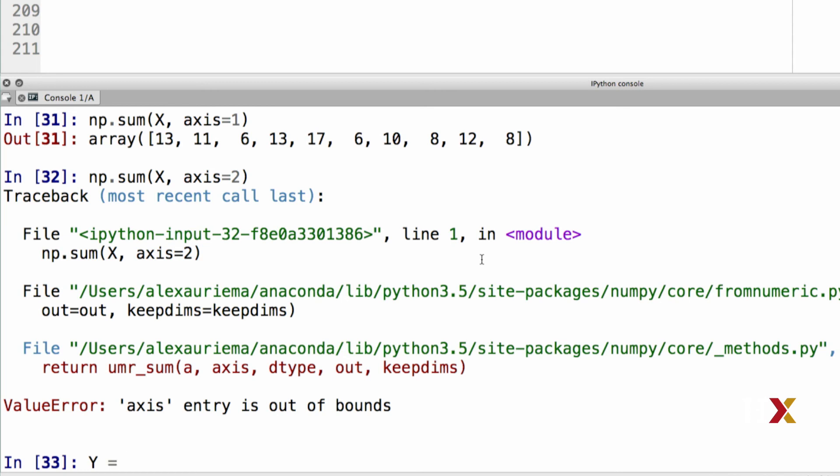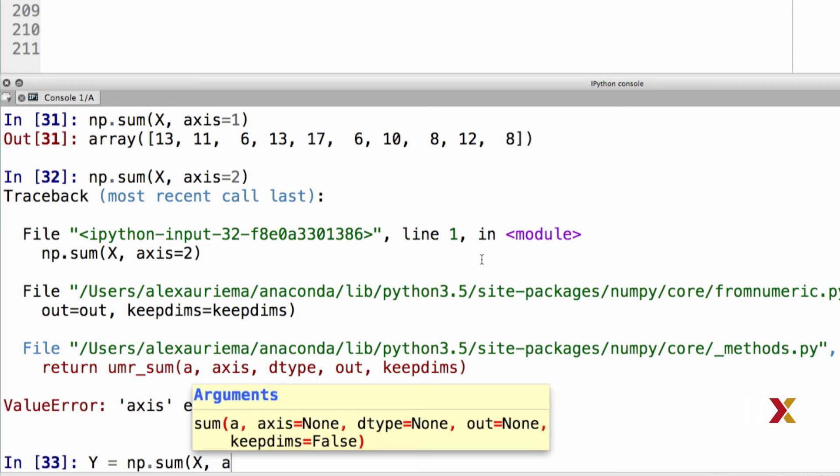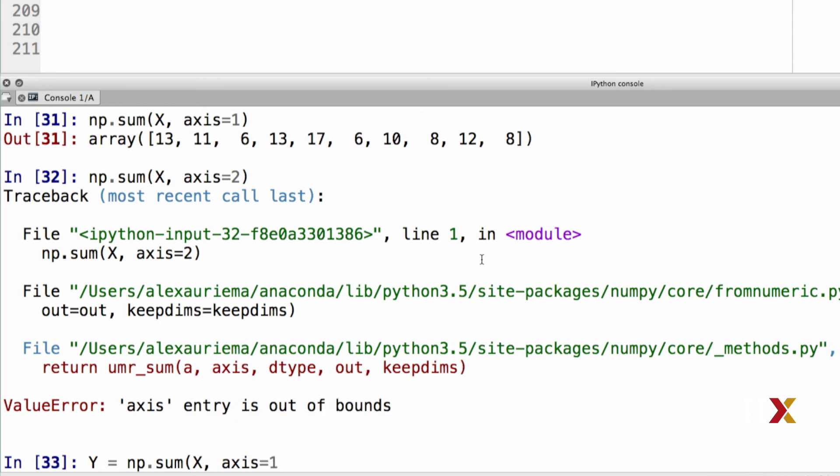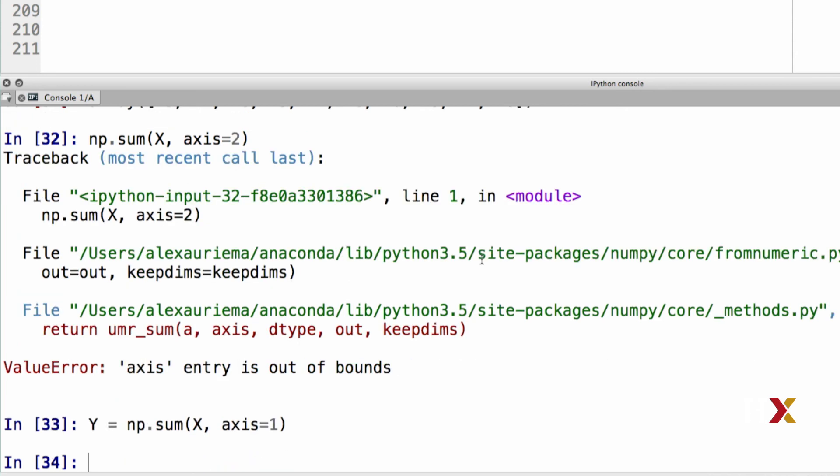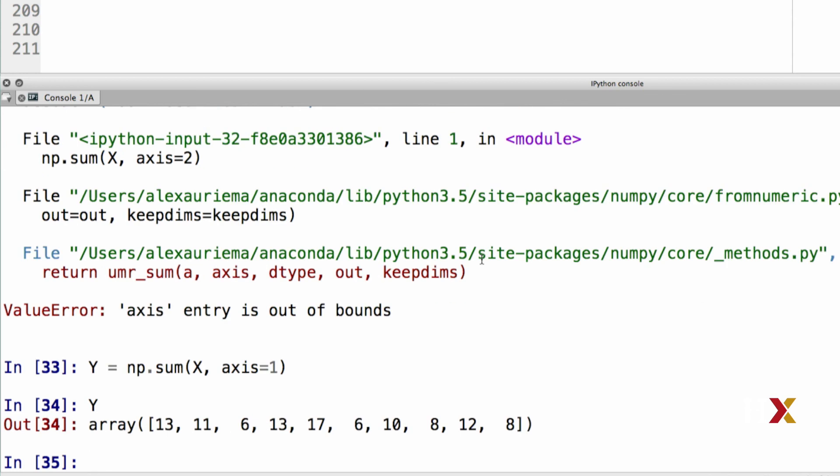So I'm now ready to write my y variable. I'm going to define y as np.sum of x over axis equals one. If I now inspect my variable y, I'll see that it has ten elements as expected.